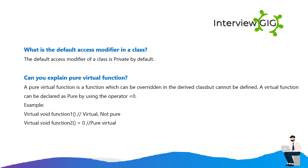What is the default access modifier in a class? The default access modifier of a class is private by default. Can you explain pure virtual function? A pure virtual function is a function which can be overwritten in the derived class but cannot be defined. A virtual function can be declared as pure by using the operator = 0. Example: virtual void function1(); // virtual, not pure. virtual void function2() = 0; // pure virtual.